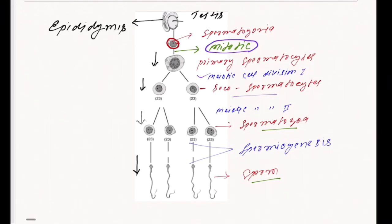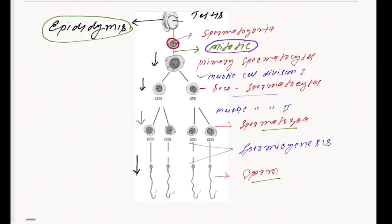So this is our epididymis, where after getting puberty the testis become capable for the production of sperm. This cell differentiates into spermatogonia, and with the help of mitotic division the spermatogonia get converted into primary spermatocytes. This primary spermatocytes after differentiation gets converted into secondary spermatocytes with the help of the first meiotic division.